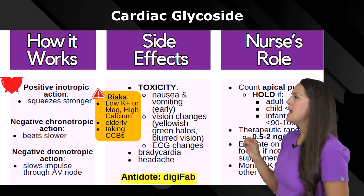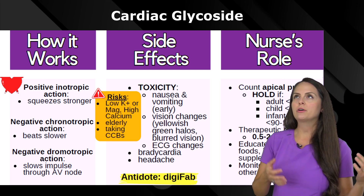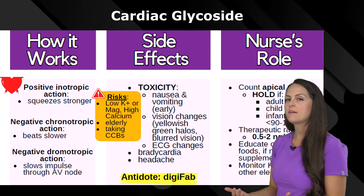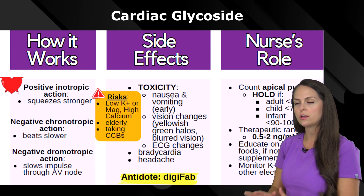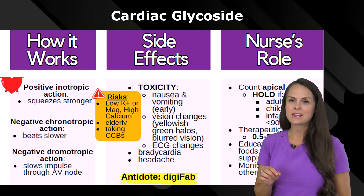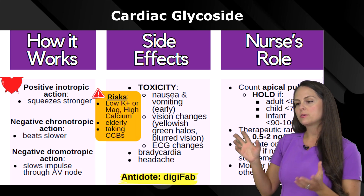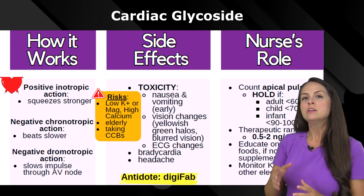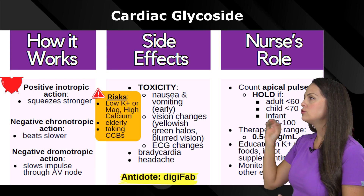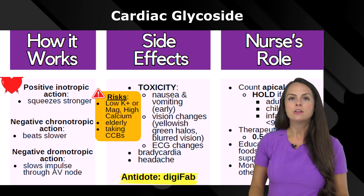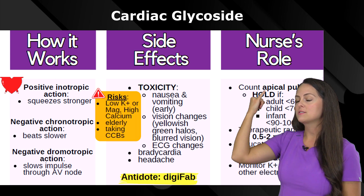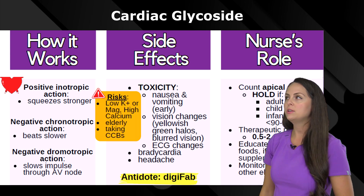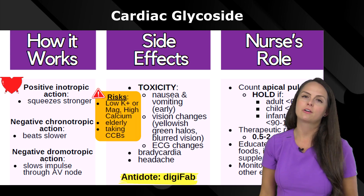Another thing is that it's going to have a negative chronotropic effect. When we're talking about chronotropic, we're talking about time — hence the rate. Because it's negative, it's going to produce a slower heart rate. Thirdly, we're going to have a negative dromotropic effect. Dromotropic refers to how the electrical signal is conducted, so it's negative — therefore we're going to have a slower impulse through the AV node. So we have a heart that's going to be stronger, slower, and with a slower impulse, which is great when you have afib, aflutter, heart failure, or cardiogenic shock.